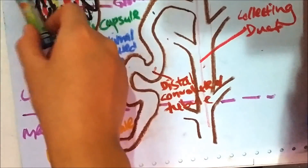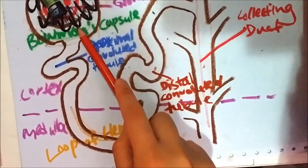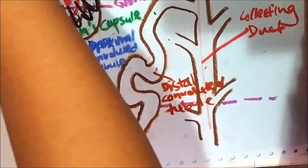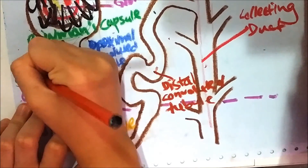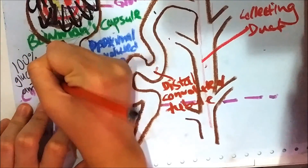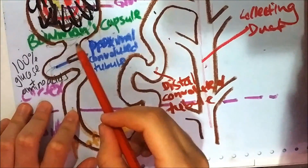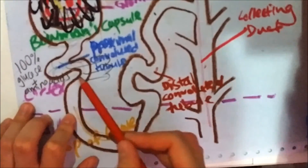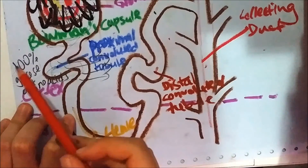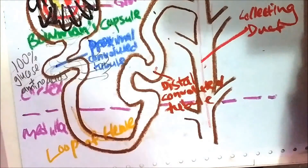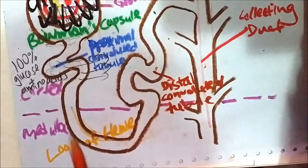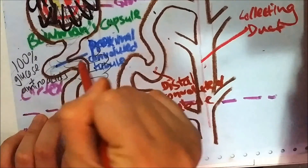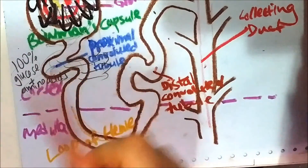The filtrate in the Bowman's capsule then flows into the proximal convoluted tubule. 100% of the glucose and amino acids are reabsorbed actively and passively into the blood capillary, because we don't want urine to contain glucose or amino acids. If urine has glucose, it means the person has hyperglycemia — diabetes mellitus. Therefore, for normal people, 100% of glucose and amino acids need to be reabsorbed at the proximal convoluted tubule into the blood.